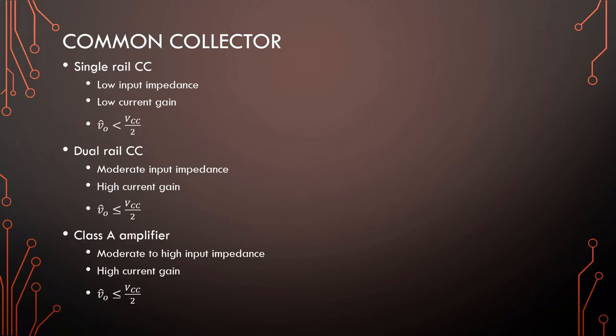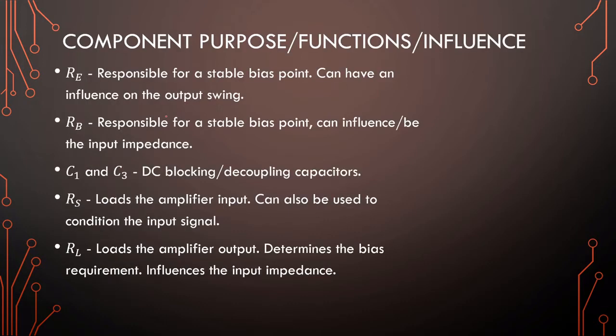The emitter resistor is responsible for the bias point and has influence on output swing, especially with single rail. RB is responsible for the bias point and can influence input impedance. If it's too low it brings down your input impedance. If it's high, input impedance is more dependent on the total load and Rπ.